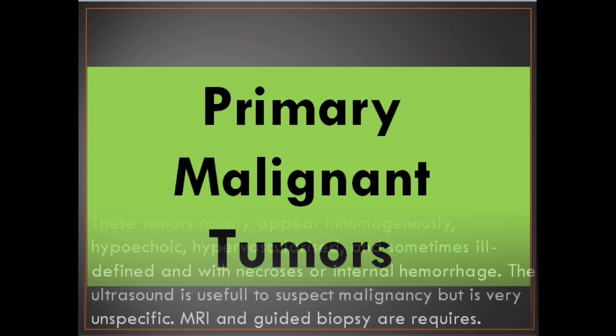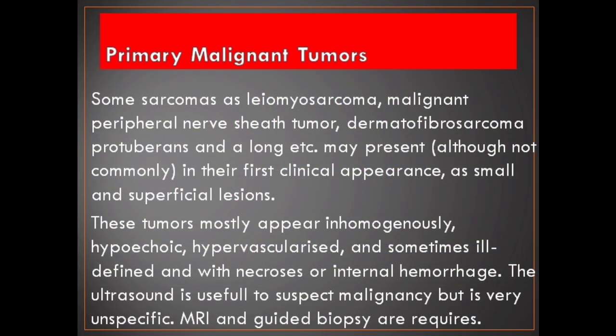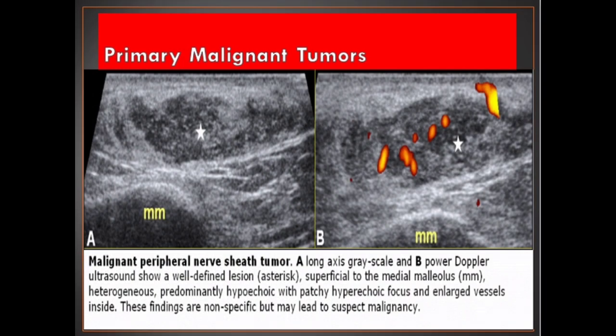Primary malignant tumors. Some sarcomas — such as leiomyosarcoma, malignant peripheral nerve sheath tumor, dermatofibrosarcoma protuberans, and others — may present, although not commonly, in their first clinical appearance as small and superficial lesions. These tumors mostly appear inhomogeneously hypoechoic, hypervascularized, and sometimes ill-defined with necrosis or internal hemorrhage. Ultrasound is useful to suspect malignancy but is very non-specific. MRI and guided biopsy are required. This image shows a malignant peripheral nerve sheath tumor.